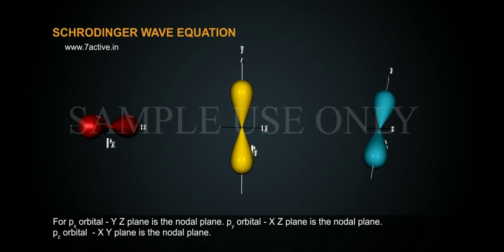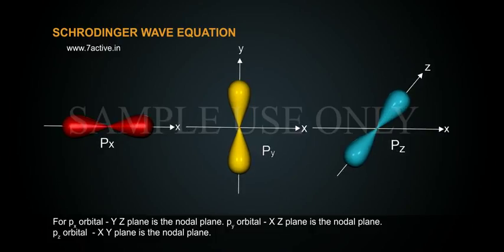For Px orbital, YZ plane is the nodal plane. Py orbital, XZ plane is the nodal plane. Pz orbital, XY plane is the nodal plane.